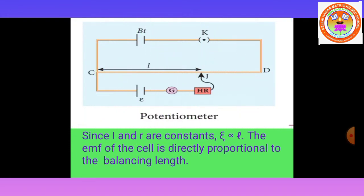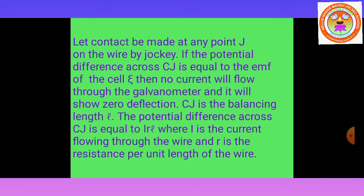The potential difference across CJ is equal to I × R × L, where I is the current flowing through the wire, R is the resistance per unit length, and L is the length CJ. The total resistance is calculated by multiplying resistance per unit length by the length CJ. So the potential difference across CJ equals I × R × L.